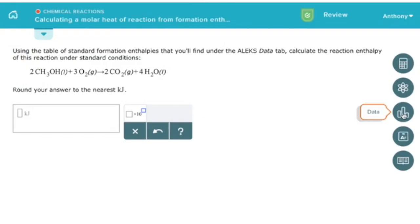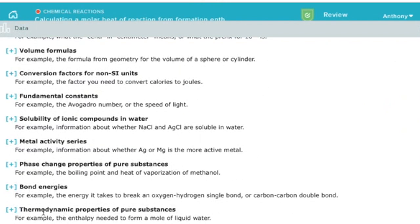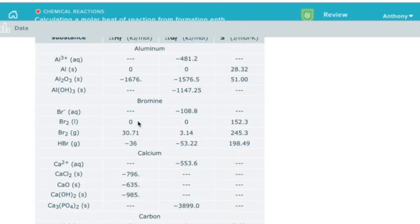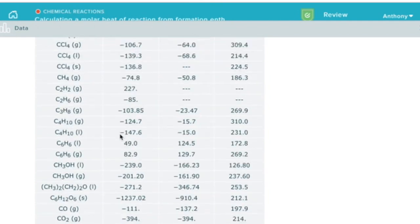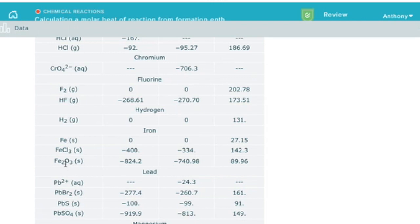So here I'm going to click on the ALEKS data tab, and in this data and formulas section, I've got this thermodynamic properties of pure substances that I can click on, and here I'm going to see all of that delta H information for the different substances that I'm looking for. In this case, we're looking for iron oxide as one of the reagents, so I can scroll down here, and I see my iron oxide here with a delta H of minus 824.2 kilojoules per mole. So I'm going to use that information to solve the rest of the problem.